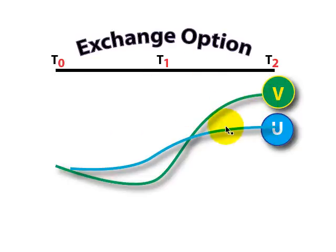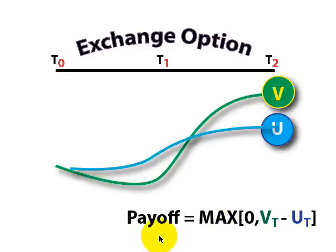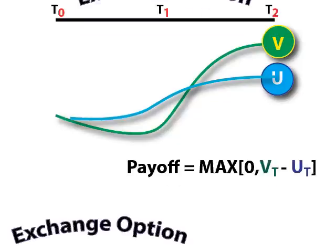And so you can see the key difference with the exchange option is we have two paths to consider: the price of the asset we're going to get back in exchange, and instead of a fixed strike price, the price of the asset that we're going to be paying. And so the payoff for the exchange option is the maximum of zero—as an option, we're not going to have negative value—and the difference between the price of asset V and the price of asset U here at time T. In terms of formula,